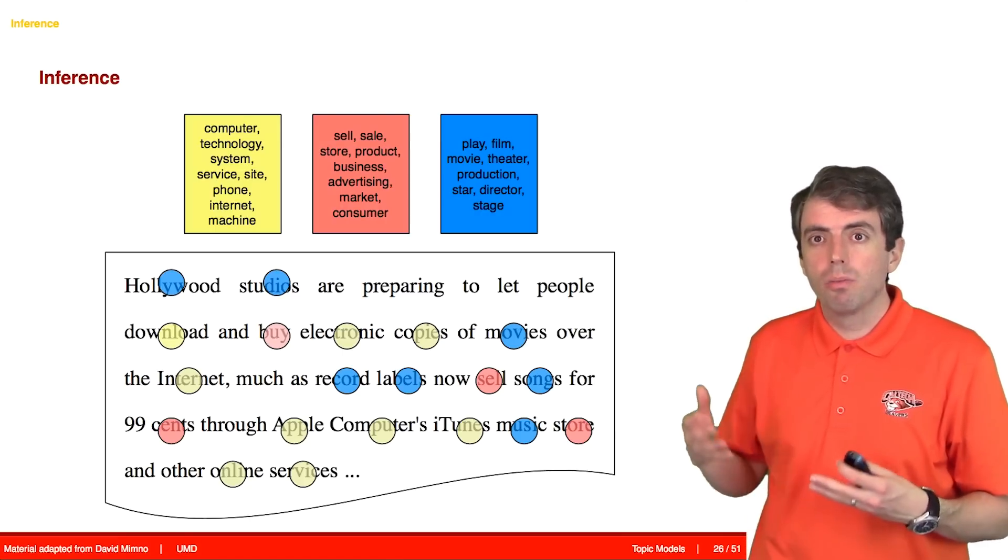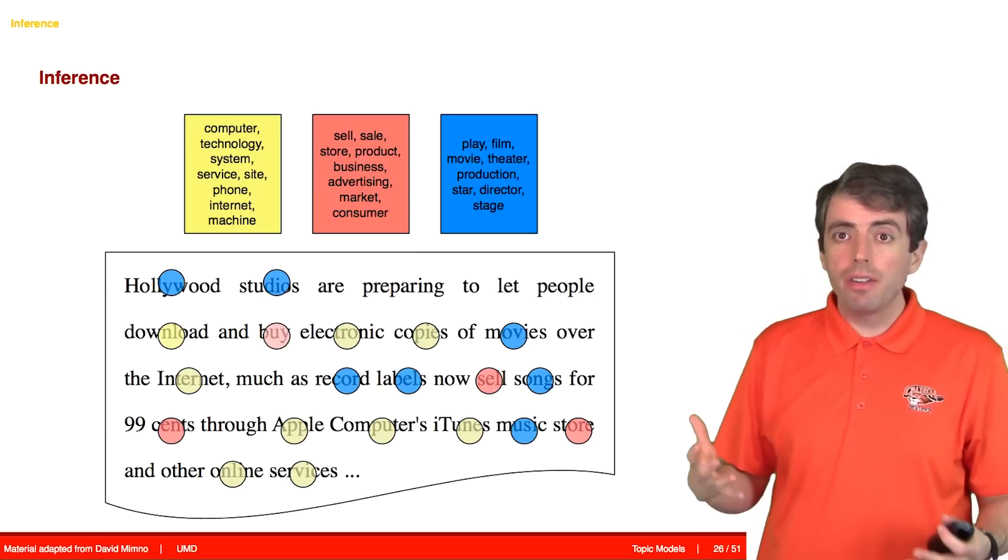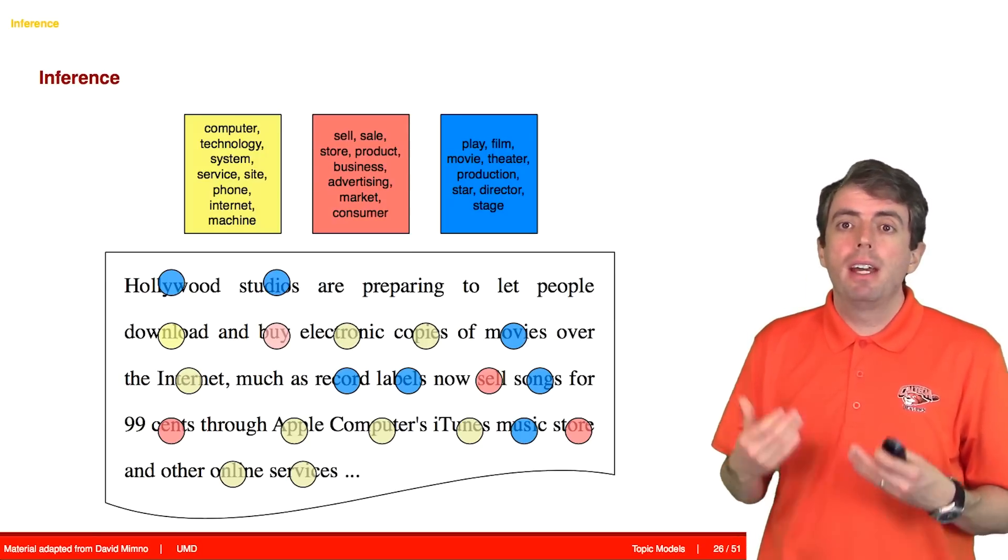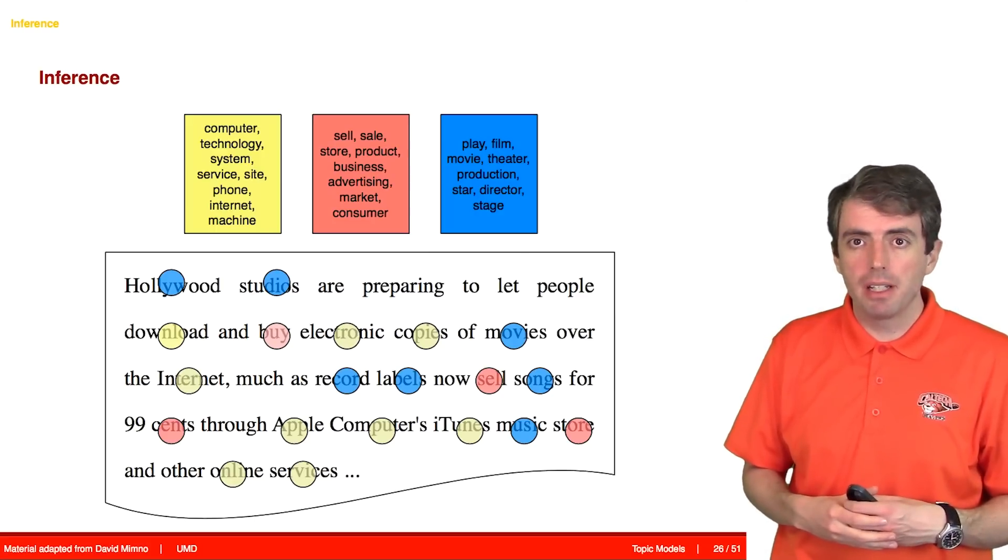This is relatively straightforward, at least for this model. Recall that what we want to do in inference is we want to figure out the latent variables that describe what's going on in a topic model.